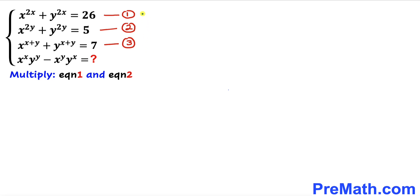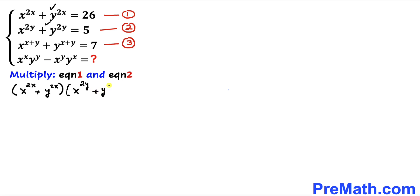Now let's multiply equations one and two. Writing down the left-hand sides: (x^(2x) + y^(2x)) × (x^(2y) + y^(2y)) equals, on the right-hand side, 26 times 5. Now let's distribute these terms.